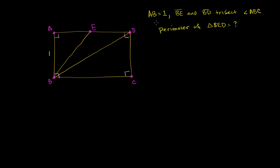We have this rectangle, and we're told that the length of AB is equal to 1. BE and BD trisect angle ABC. Trisect means dividing it into three equal angles, so this angle equals this angle equals that angle. What they want us to figure out is: what is the perimeter of triangle BED? It's the middle triangle in the rectangle.